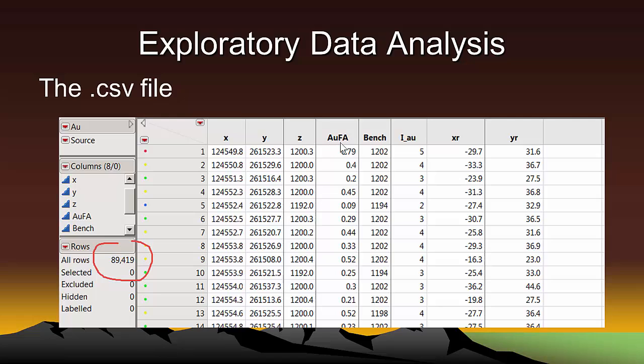The column labeled bench contains the bench elevation and is useful for making level maps. Column IAU contains fire assay gold indicators. The indicators are defined at the 0.2, 0.4, 0.6, 0.8, and 0.95 quantiles of the blast hole grade distribution. These are useful for making level maps, where each indicator is given a special color.